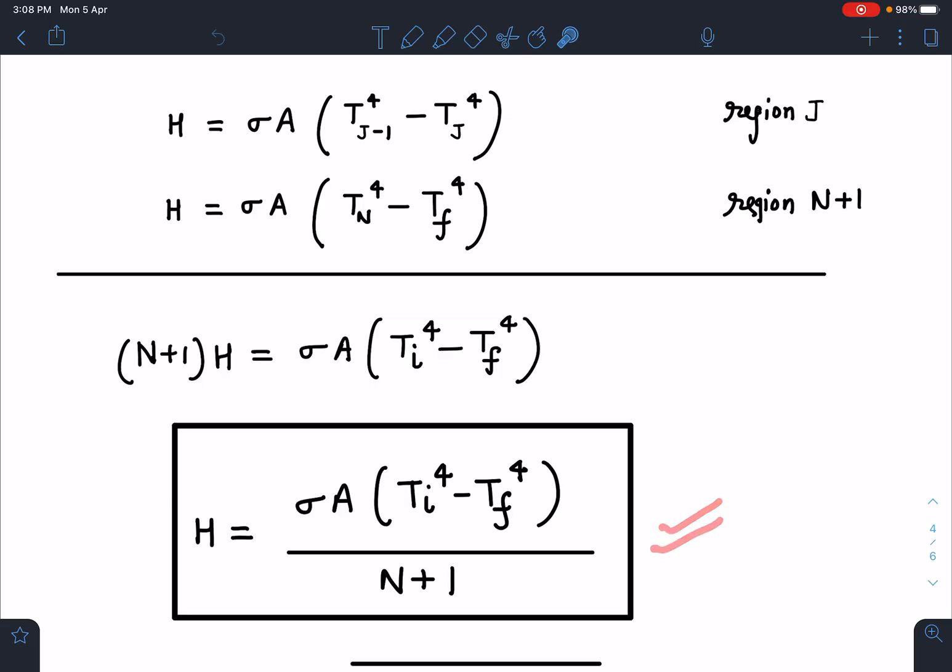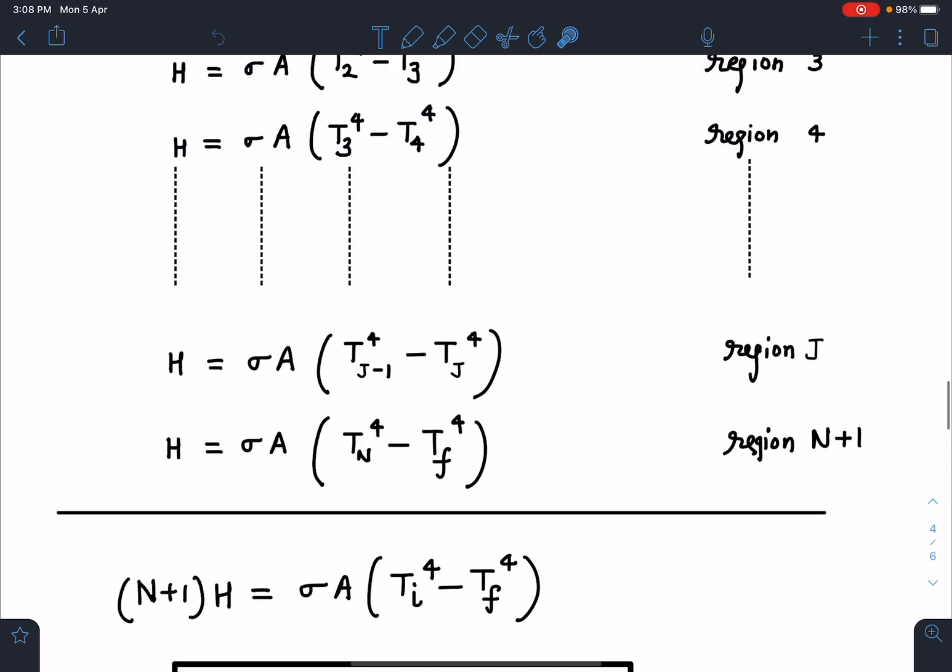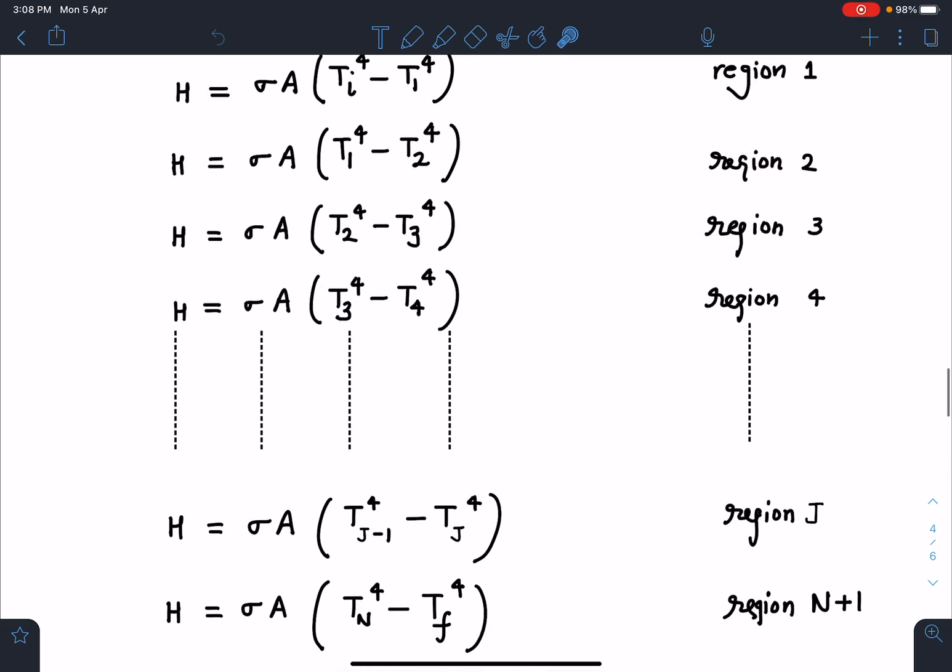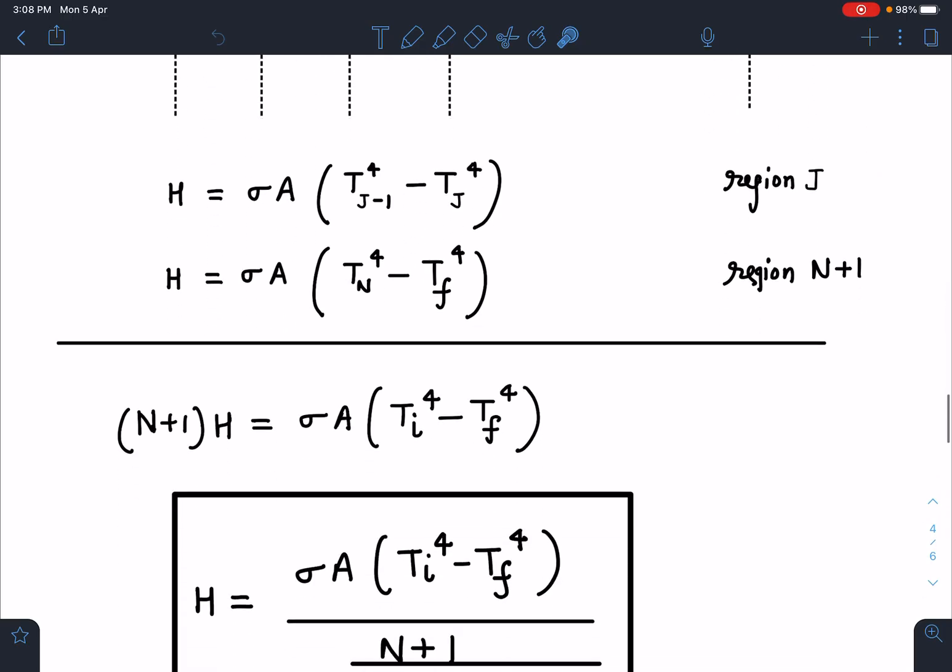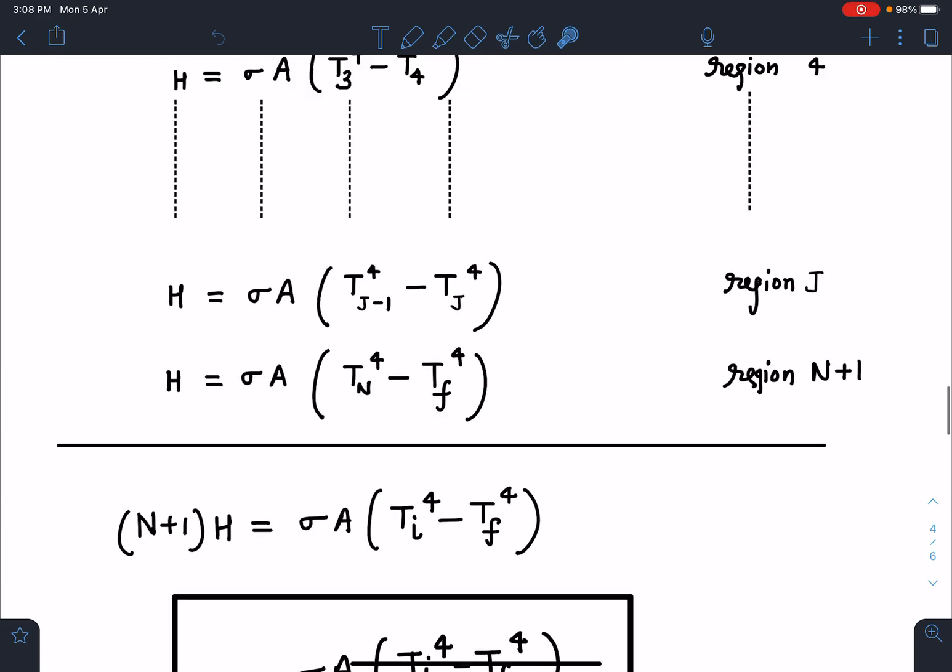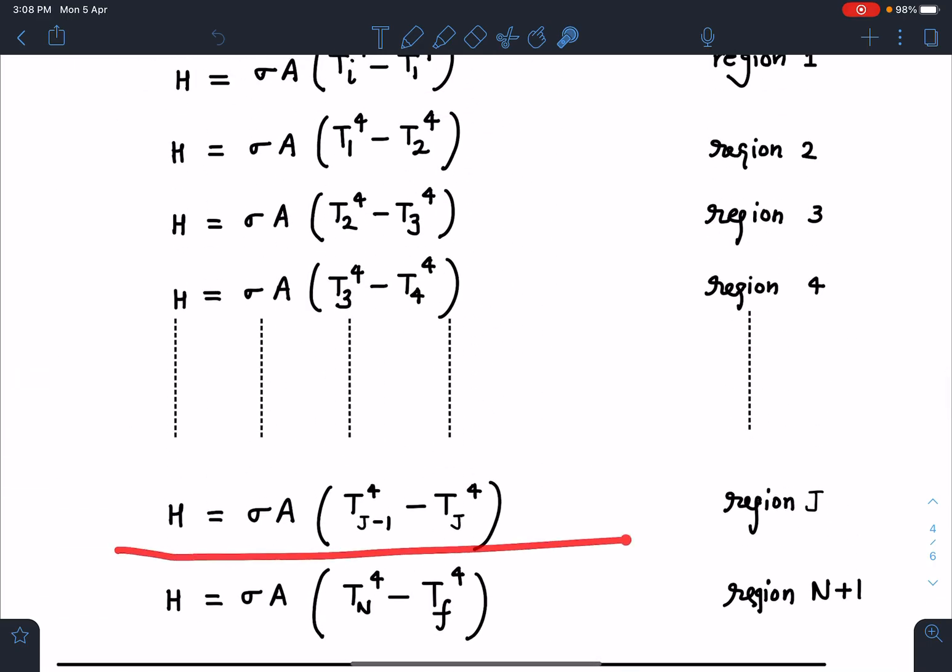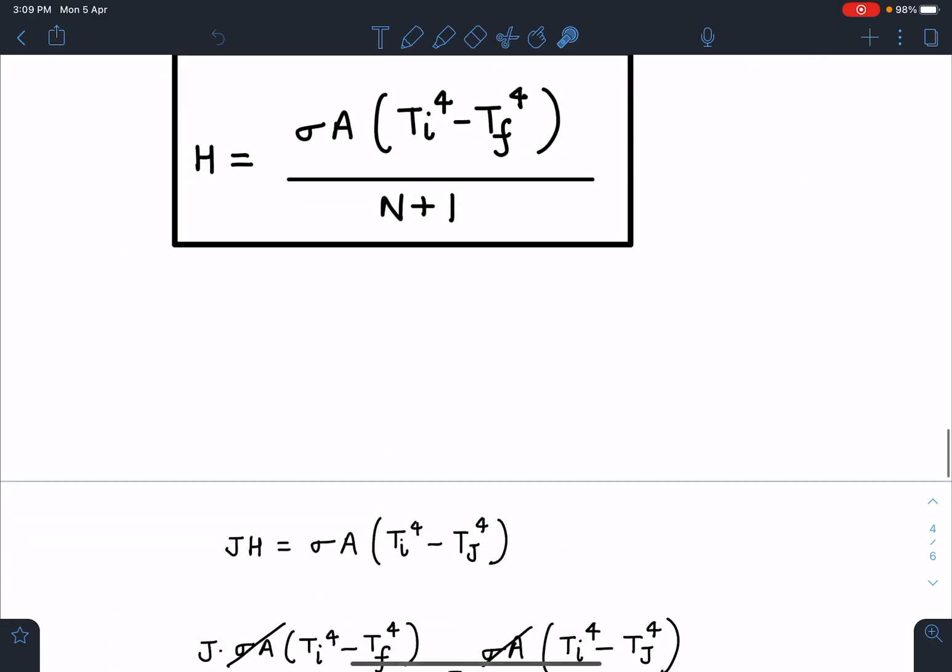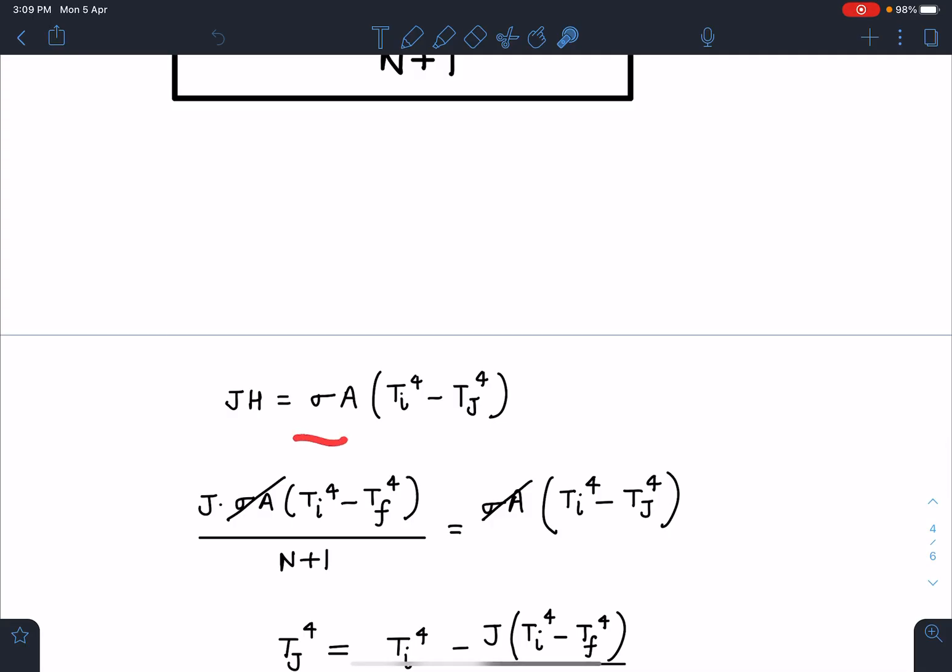Once I know this value of H, I will perform the same thing for TJ temperature of jth plate. I will add only up to J lines or first J equations. When I do this, this will become J times H and all these terms are going to get cancelled. So my equation will become J times H is equal to sigma A Ti to the power 4 minus Tj to the power 4.